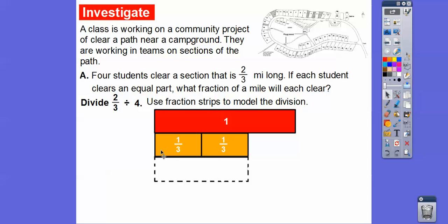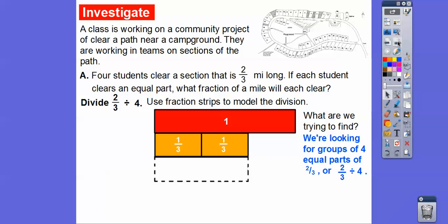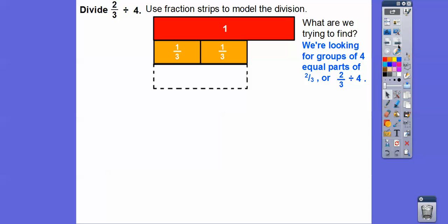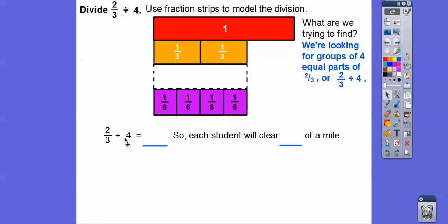Here's one whole right here. Here's one-third of it, here's another third, so here's two-thirds. We're going to take this two-thirds and divide it by four, looking at fraction strips to find four strips that will fit in equally. We're looking for groups of four equal parts of the two-thirds. There are four one-sixth pieces right there. So two-thirds divided by four equal pieces means each of them is going to work on one-sixth of a mile. Each student will clear one-sixth of a mile of that campground path.